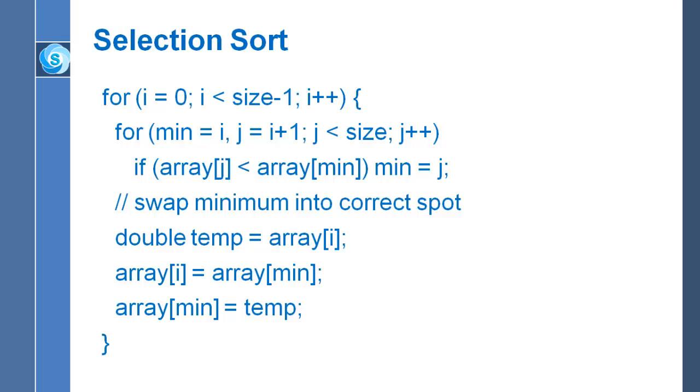After the inner loop comes the swapping. The last three statements inside the outer loop are basically saying take whatever the minimum entry is and swap it with whatever's in position i. It's basically saying to swap the minimum entry discovered into the correct position.